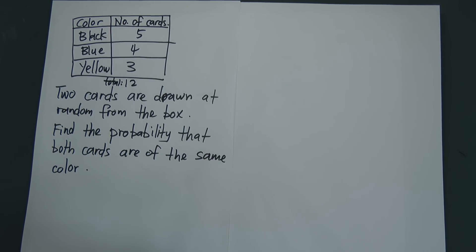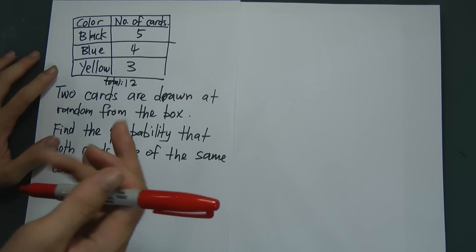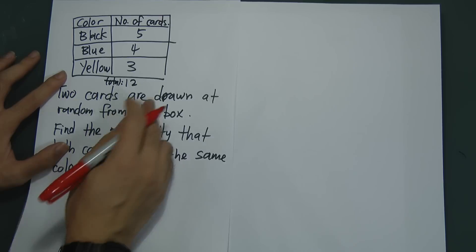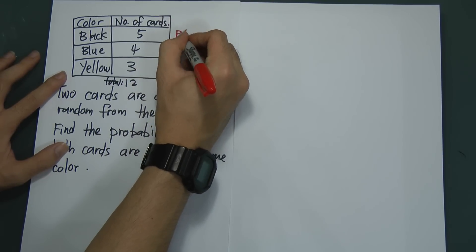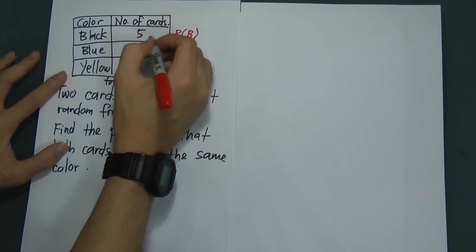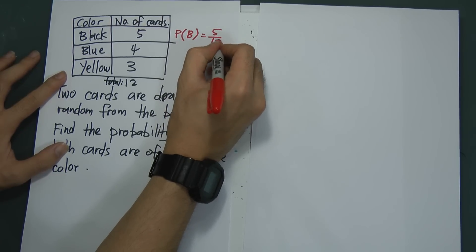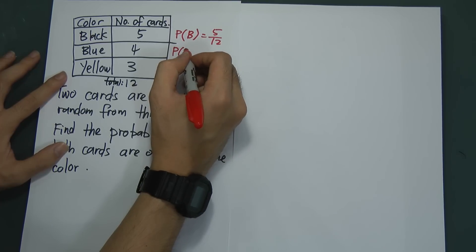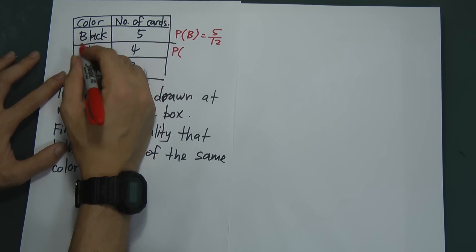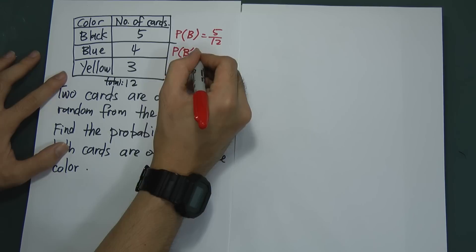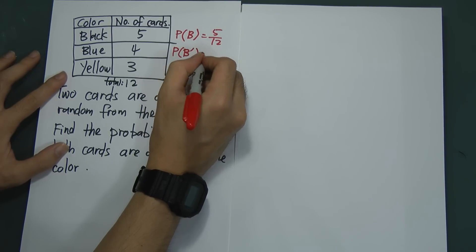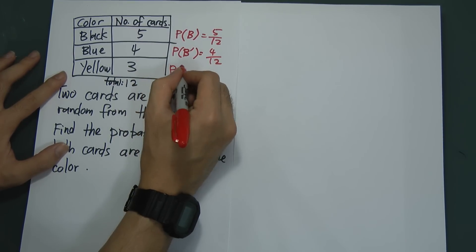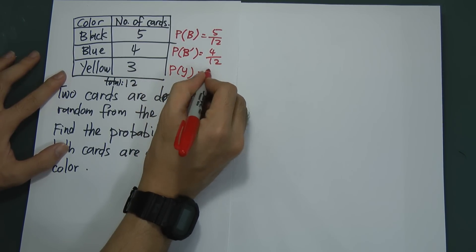Let me do some calculation before starting the discussion. First, I want to find the probability of getting a black color card — that will be 5 over 12. The probability of getting a blue card will be 4 over 12. I call blue 'B prime' since both black and blue start with B. For yellow, the probability is 3 over 12.